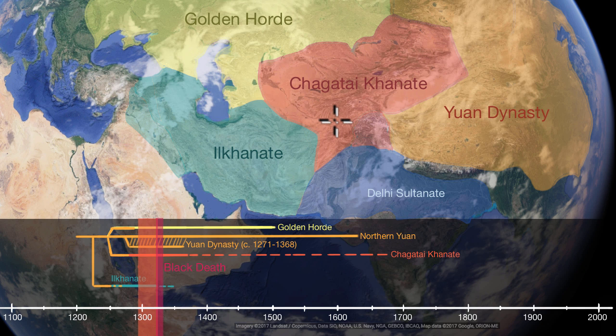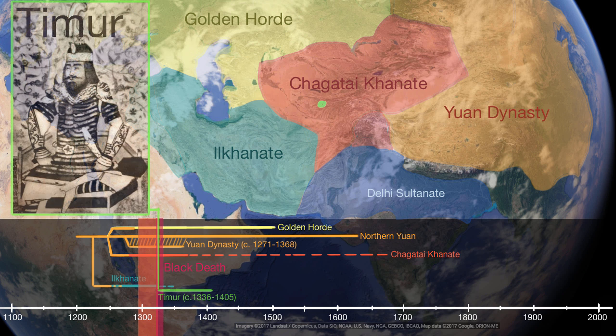At the same time, in the southwest corner of the Chagatai Khanate, a future conqueror is born — Timur, which means iron. He's often known as Tamerlane because when he was young, he was injured in both the hand and leg by arrows, which impaired his movement. This is why the Europeans called him Timur the Lame, which became Tamerlane.